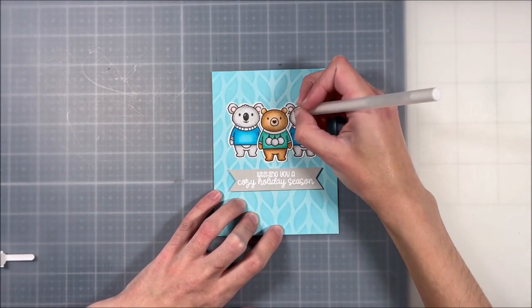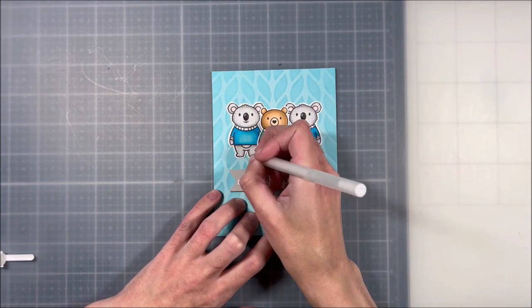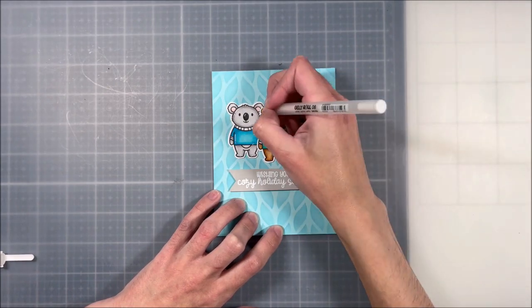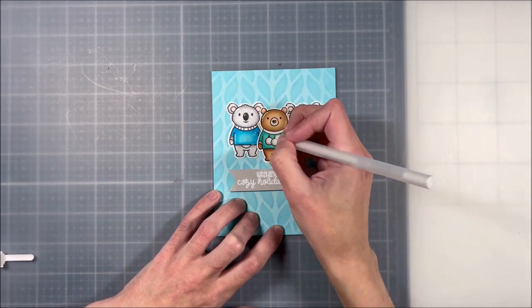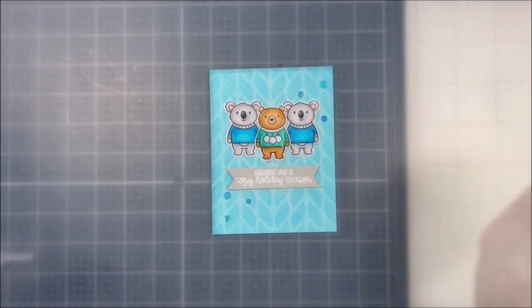Of course I'm going to come in with some white gel pen just to add a few highlights and details. Again, I'm not an expert at this, I just kind of put things where they look best. Cavia has an amazing infographic on Instagram and I would definitely suggest checking that out.